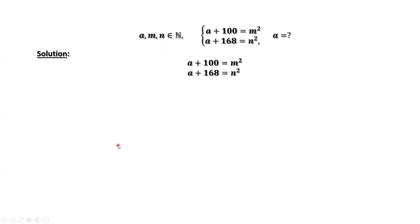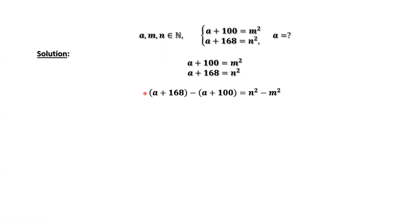From the two given conditions, we have the following result. Taking the second equation minus the first equation and simplifying, we have N squared minus M squared equals 68.